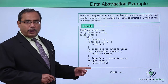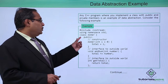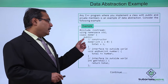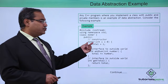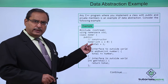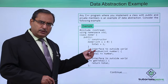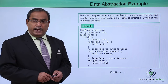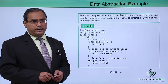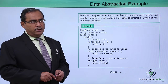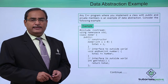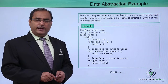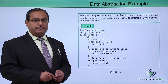Let us go through one sample example. Here we have a class named 'adder'. Under this adder class, we have one constructor. A constructor is a function whose name is the same as that of the class name, and it must always be declared under the public section. When an object is instantiated from this class, the constructor is invoked automatically by default.